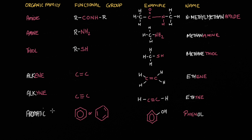Finally, aromatics are represented by either a ring with a circle in the middle, which represents benzene, or in an alternative structure. In our example here, we've got our benzene ring attached to an OH — so this is an aromatic alcohol, which is known as phenol.